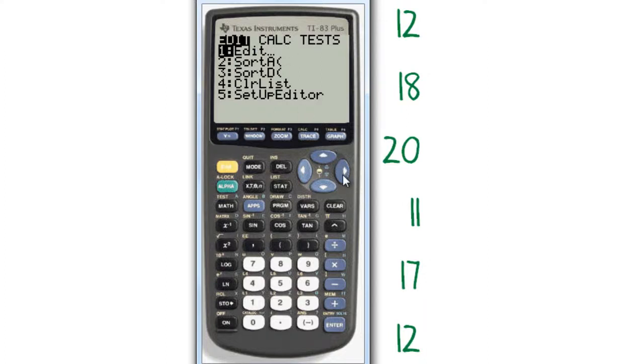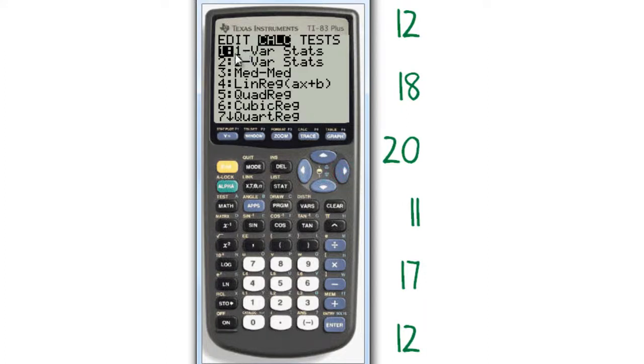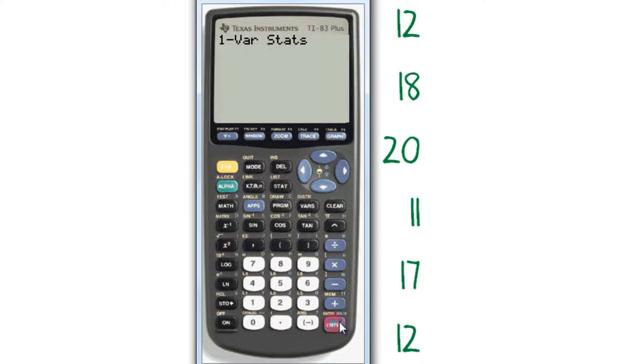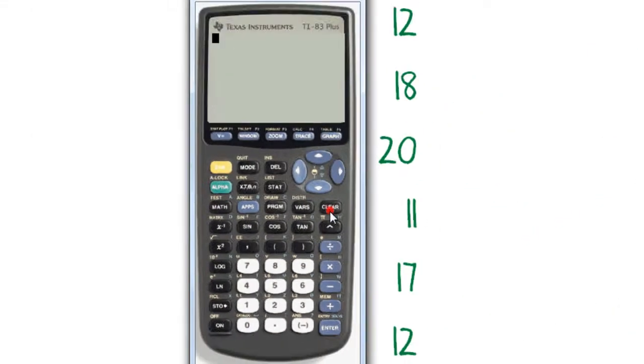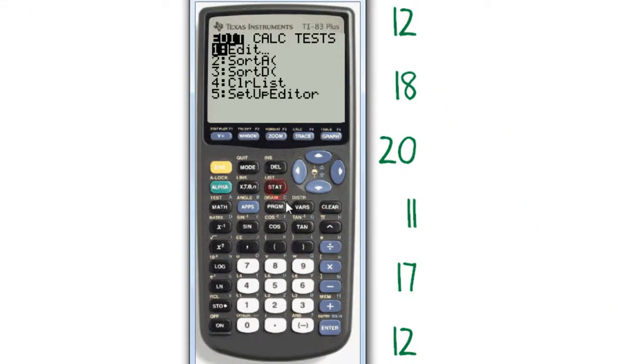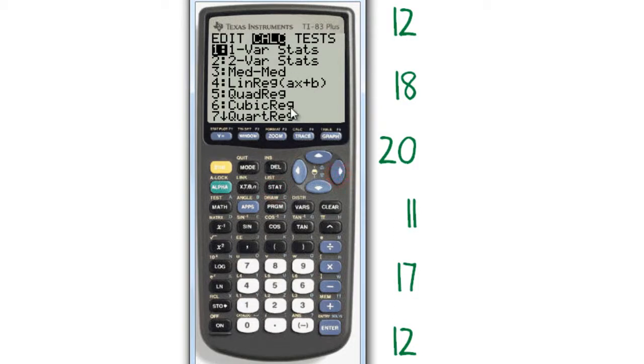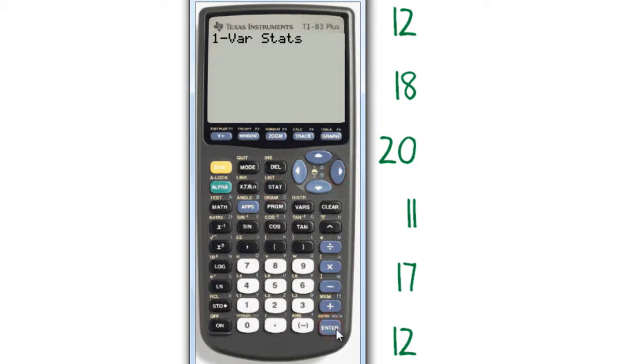I use this arrow and go over. Now I want one-variable statistics because I only have one variable here. That's highlighted, so I'll just press enter. Now I tell it which list to use. The default is it will look at list one. If you wanted it to look at list two, you would say second two because that's using this little yellow list two button there. But I'll just clear that because I just need it to do list one. So I'll just go over again, one-variable statistics, and I just press enter.